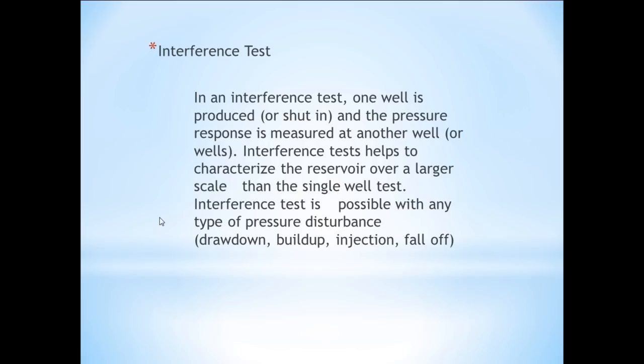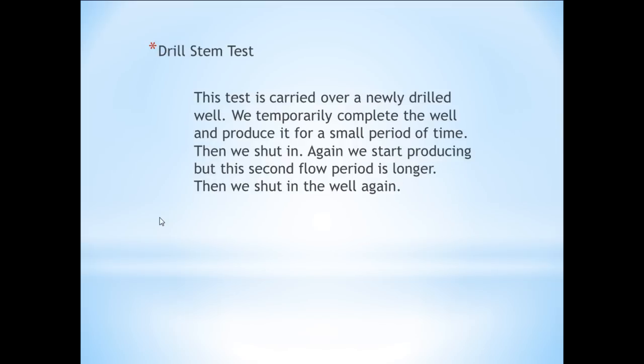In an interference test, one well is produced or shut in and the pressure response is measured at another well or wells. This test helps characterize the reservoir over a large scale rather than around a single well, so bulk reservoir properties are more easily determined using interference testing. Interference testing is possible with any type of pressure disturbance — drawdown, buildup, injection, or fall-off.